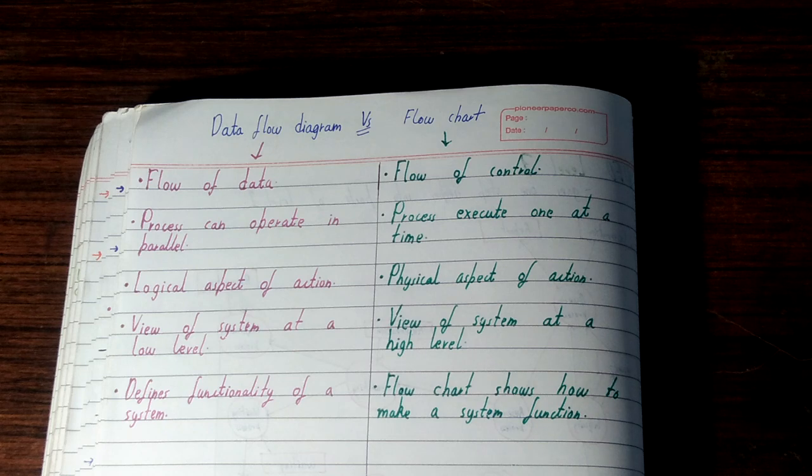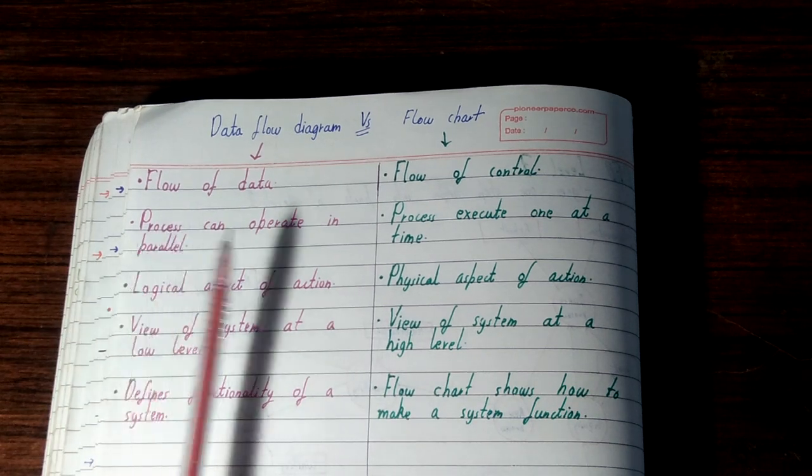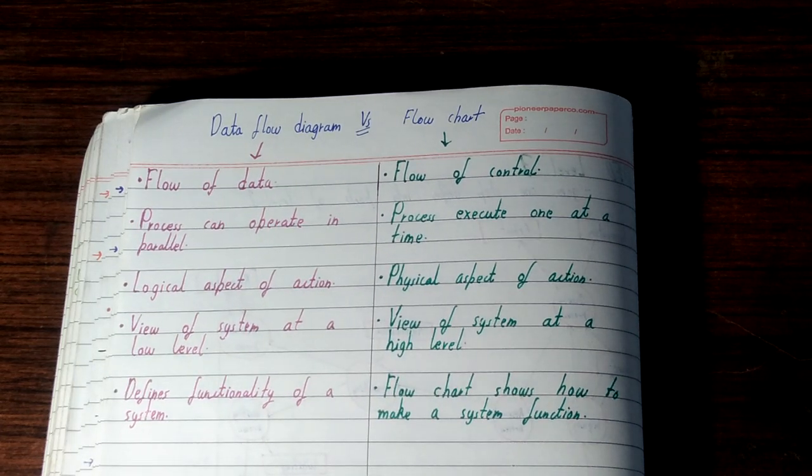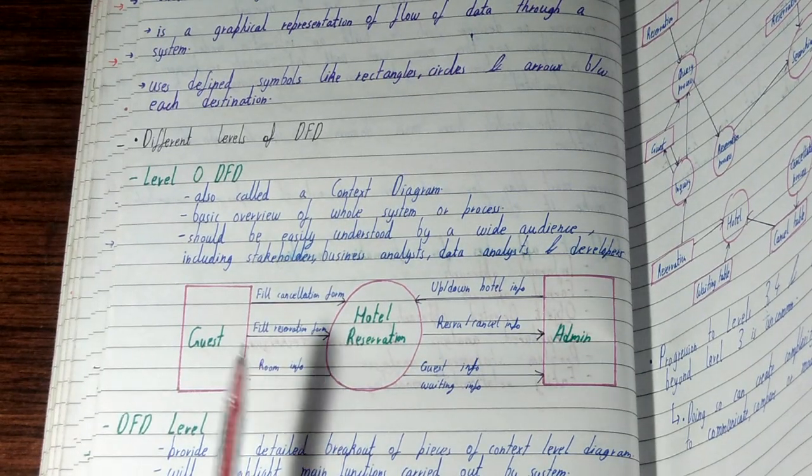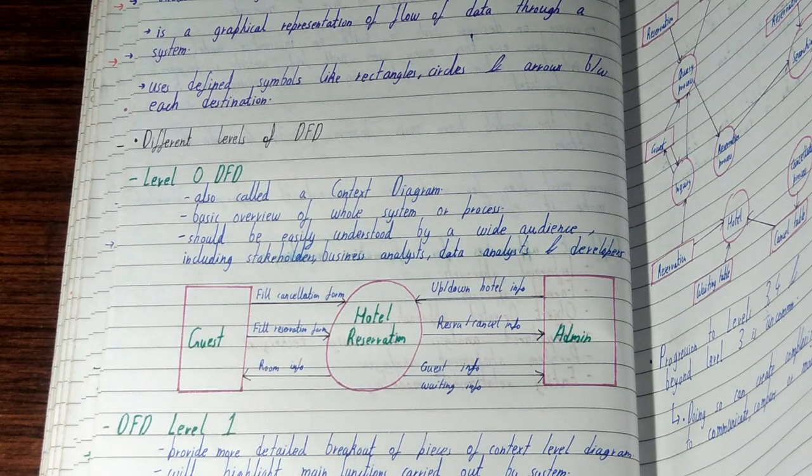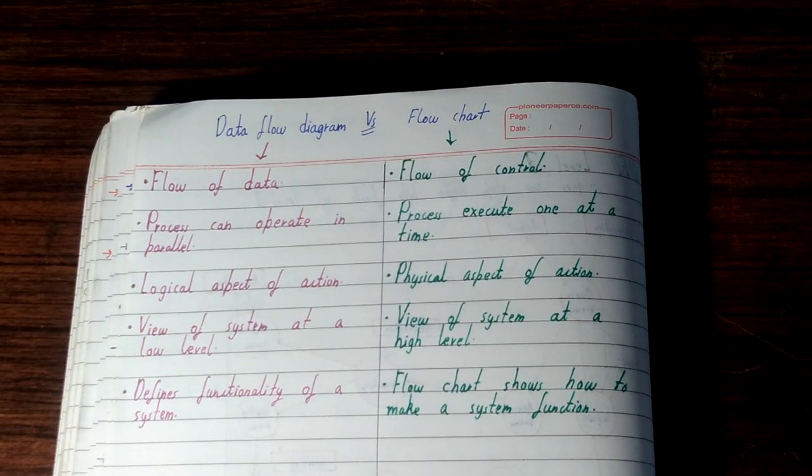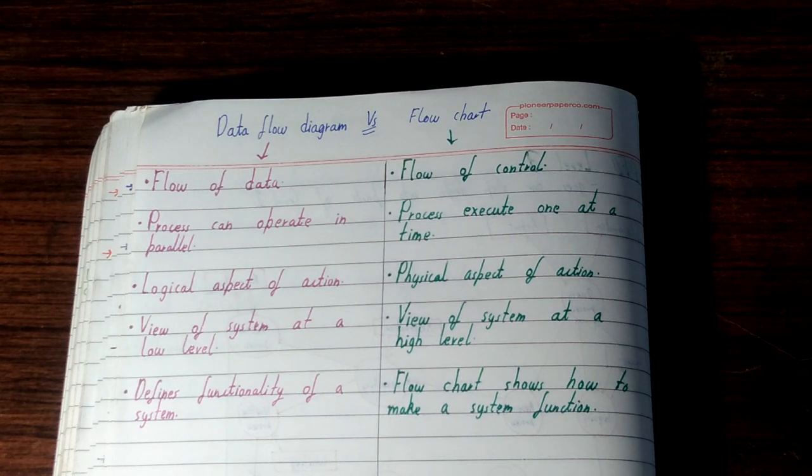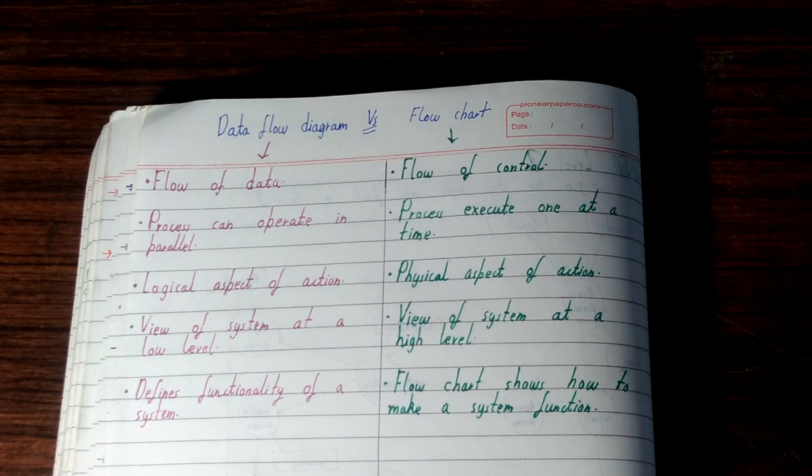In data flow diagram, processes can operate in parallel. But in case of flow chart, processes cannot execute in parallel - they operate one at a time. If you talk about data flow diagram, you can see all the points are written, all the processes are defined, not one by one, not in a step by step format. But in flow chart, you show one step at a time, make a decision - yes or no - and move to another step, taking an action on each step.